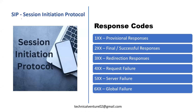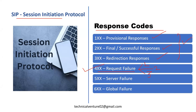Hi everyone, welcome back to my channel. I'm again going to discuss about the same response codes, but in this particular lecture I'm going to discuss about the 4xx request failure. It will be divided into three parts because it contains multiple response codes — almost 25 to 30 response codes. In the previous lectures I discussed about 1xx provisional responses, final or successful responses, and the redirection responses as well.